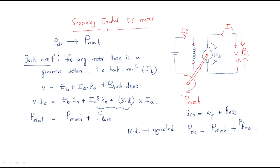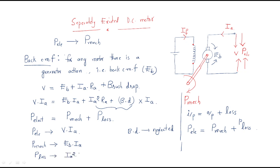So finally we can write: electrical power is V*Ia, mechanical power is Eb*Ia, and the loss is Ia²*Ra. This loss is also called the copper loss.